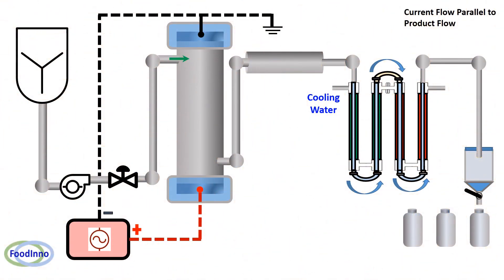Ohmic heating process could be operated as batch or continuous mode. In this diagram, we could see units and their operation in the case of a continuous ohmic heating process for liquid or liquid with particulates.